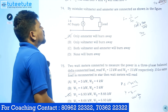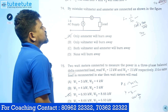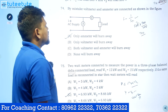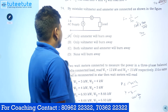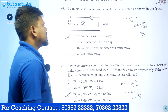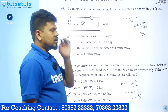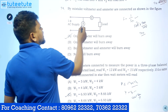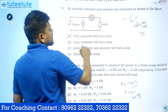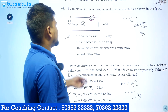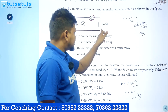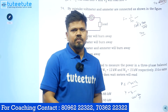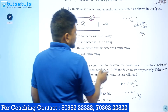The next question: by mistake, voltmeter and ammeter are connected as shown in the figure. The options are: only ammeter will burn, only voltmeter will burn, both will burn, or none will burn. Generally, the ammeter needs to be connected in series with the load and the voltmeter across the load. Here they have been connected in reverse.